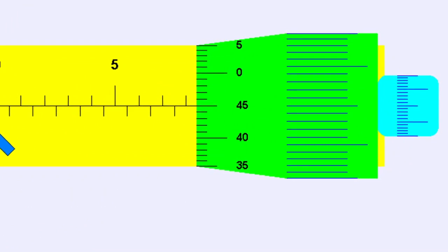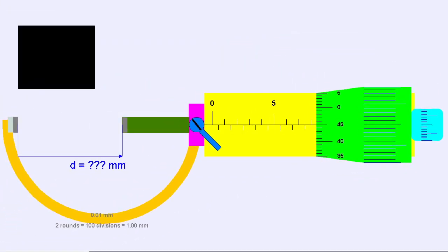Going back to the equation on how to get the LC, we have LC equals 0.5 mm divided by 50, which is equal to 0.01 mm.